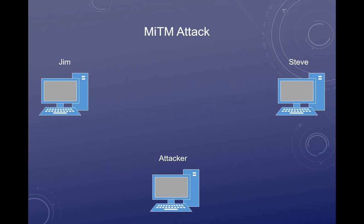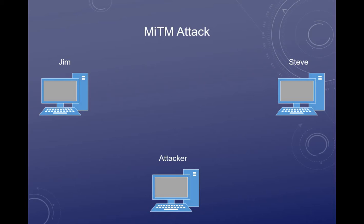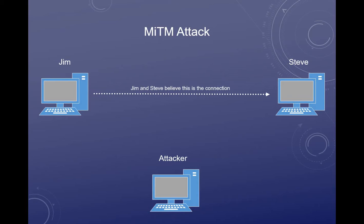Let's put this into play in the case of a man-in-the-middle attack. There are multiple ways to carry it out — it can happen before the two machines even connect or during the session. The one I'm going to show happens before the two machines even create a session. Let's say Jim and Steve want to talk — they think they're communicating straight to each other, but an attacker is really in the middle controlling the conversation. Every packet Jim sends goes to the attacker, and every packet Steve sends goes to the attacker.